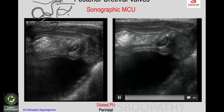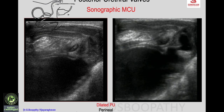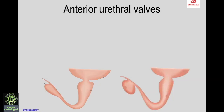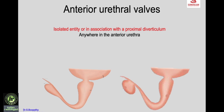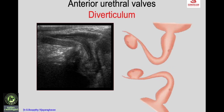The sonographic micturating cystourethrogram (MCU) can be performed with the probe in the suprapubic or perineal region to diagnose posterior urethral valves. The next anomaly is anterior urethral valves, an isolated entity or in association with a proximal diverticulum, occurring anywhere in the anterior urethra. Findings are highly variable depending on patient age and degree of obstruction; the urethra appears dilated proximal to the valve and narrow distal to it.